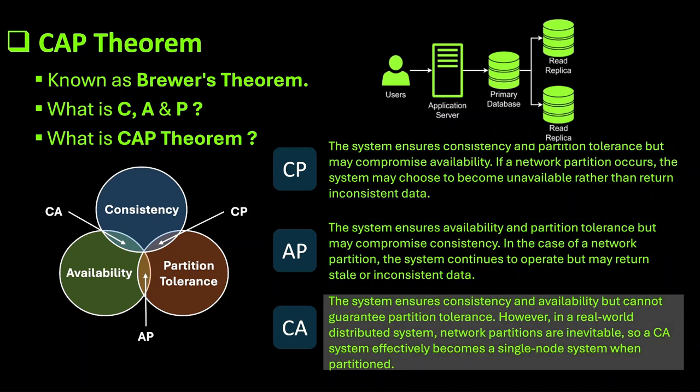Lastly it is CA. In this case the system ensures consistency and availability but cannot guarantee partition tolerance. However, in a real-world distributed system, network partitions are inevitable, so a CA system effectively becomes a single node system when partitioned.